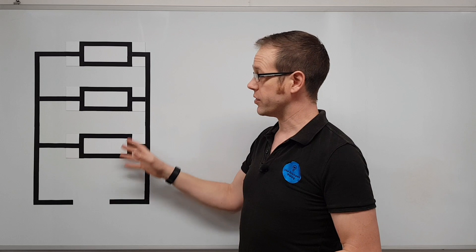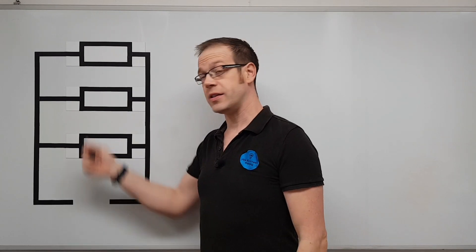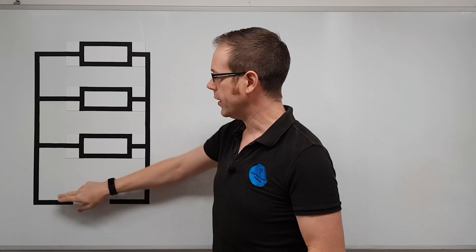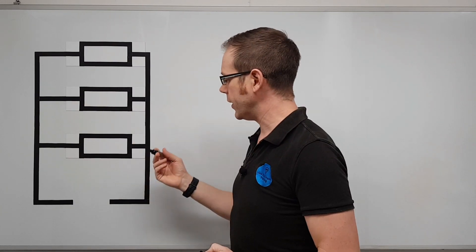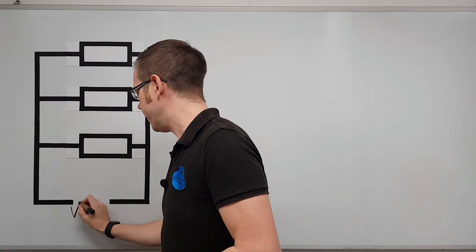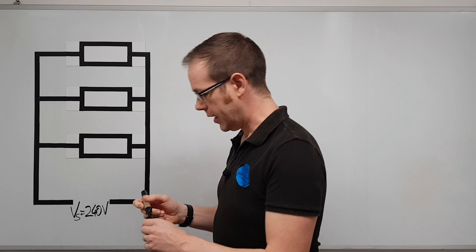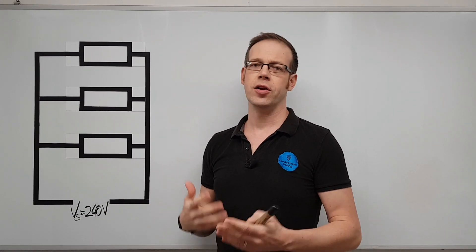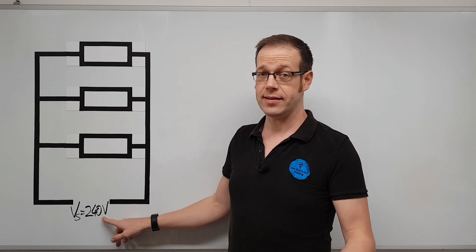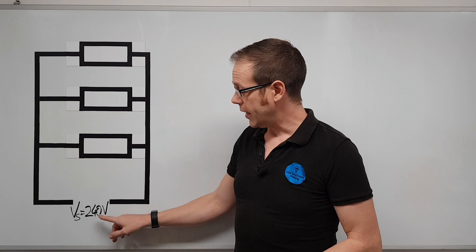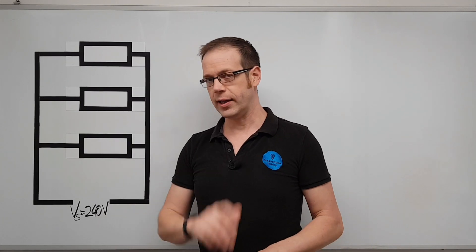The first thing we need to do is assign some values to the circuit. The voltage we're applying — the supply voltage, VS — is going to be equal to 240 volts. You might wonder why not 230 volts, which is the nominal single-phase voltage in the UK, but 240 volts is a more realistic measured value and is much more divisible, which will help with our calculations.